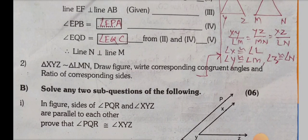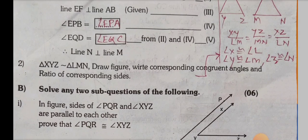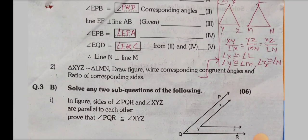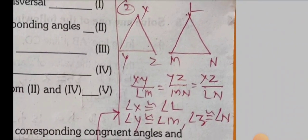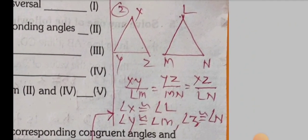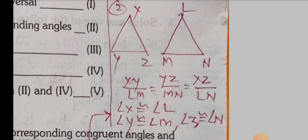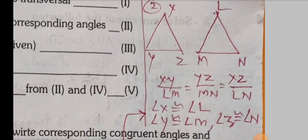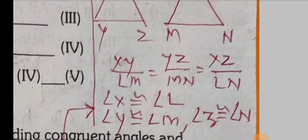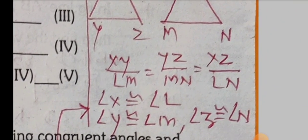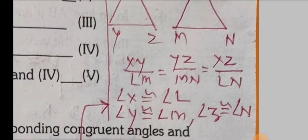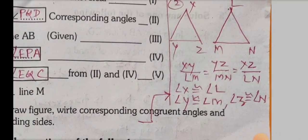And angle EQD equals angle EQC. From these results, line N is perpendicular to line M. Sub-question 2: Triangle XYZ is similar to triangle LMN. Write the corresponding congruent angles and ratio of corresponding sides. XY upon LM equals YZ upon MN equals XZ upon LN. Corresponding angles: angle X congruent angle L, angle Y congruent angle M, angle Z congruent angle N.